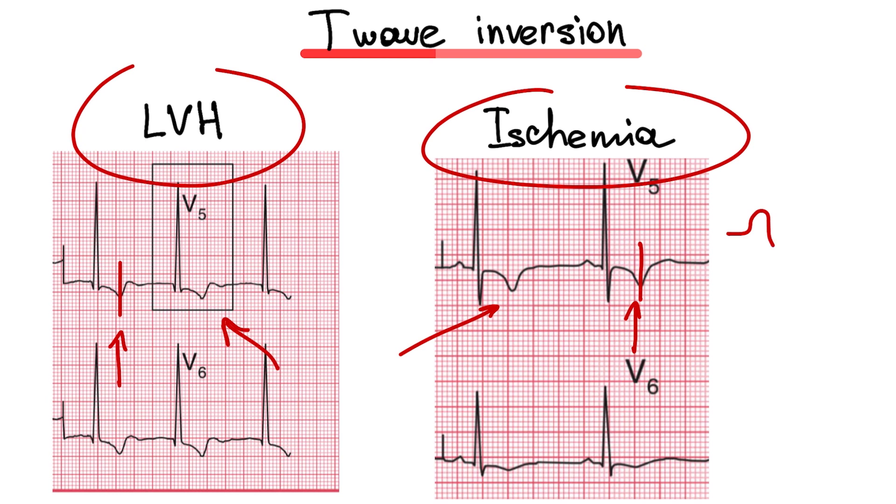Sometimes you can see biphasic T wave with positive and negative parts. If you see the second negative part it's most likely myocardial ischemia.